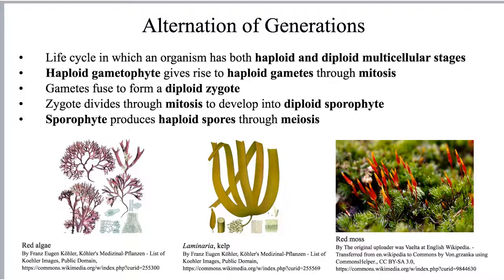This is a review video addressing alternation of generations, which is a life cycle in which an organism has both haploid and diploid multicellular stages. Alternation of generations tends to be a confusing topic for many people because there is a lot of terminology involved and it's a cycle, so you're looking at the change from the haploid stage to the diploid stage and back again.